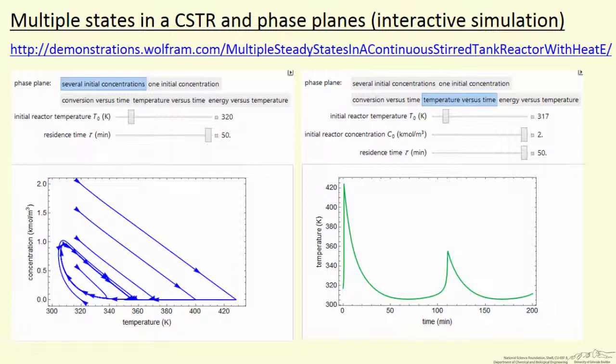You can also look at conversion. Conversion gets higher as the reactant concentration gets lower. So we can look at conversion versus time. For this particular condition, we also will see oscillations. And then we can look at energy versus time plot and we'll look at that when we go to the simulation.